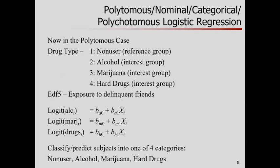So what is polytomous going to do? We still have our reference group — we're going to use non-users as the baseline. Now we have three other groups; we've broken 'user' down into those three. So what we're going to do is build simultaneously three logit expressions — one for alcohol use, one for marijuana use, and one for hard drug use — each with their own intercepts and slopes.